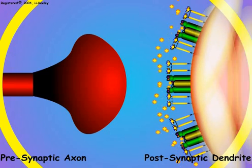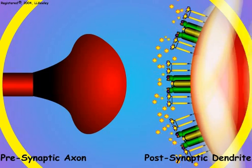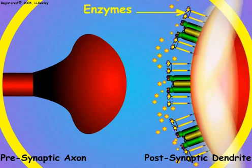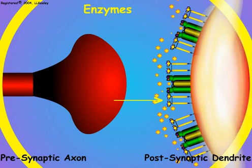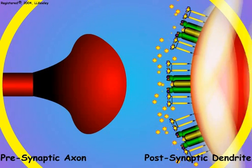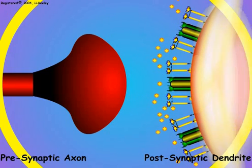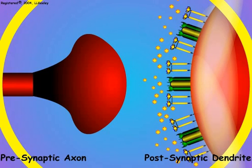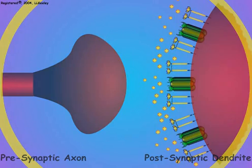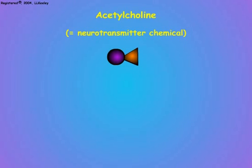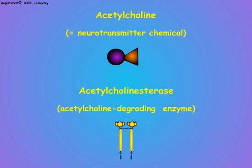To stop the depolarization of the postsynaptic region by the neurotransmitter chemicals, proteins called enzymes are present that destroy the neurotransmitter chemicals. When the neurotransmitter chemicals are eliminated, the postsynaptic sodium channels close, the sodium is transported back to the outside of the postsynaptic membrane by the reactivated sodium pumps, and the outside of the postsynaptic membrane returns to its normal positive charge. It is relevant to note that the synapse illustrated here uses acetylcholine as its neurotransmitter chemical, and the enzyme that destroys acetylcholine is called acetylcholinesterase.